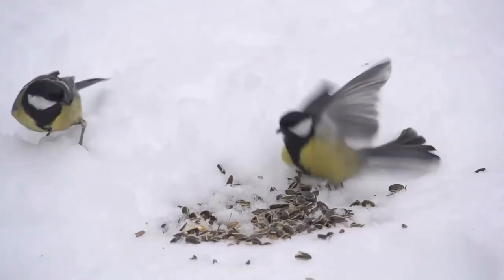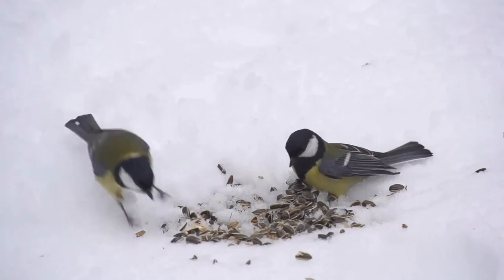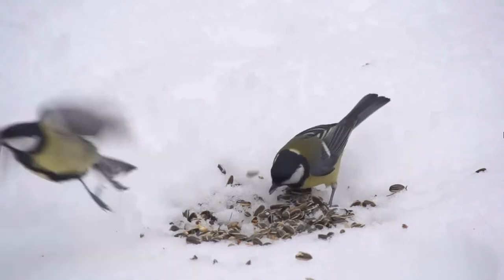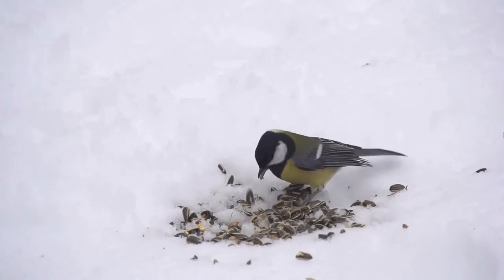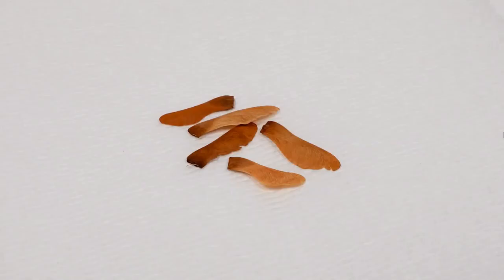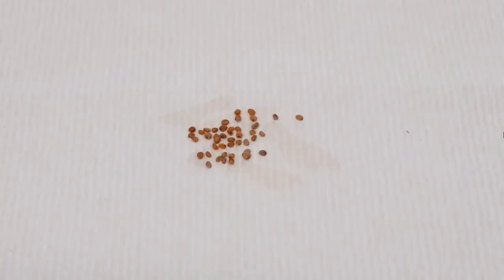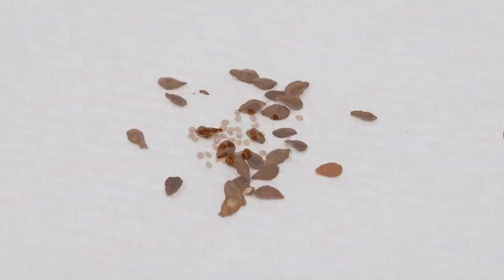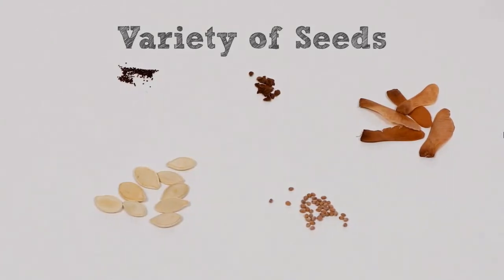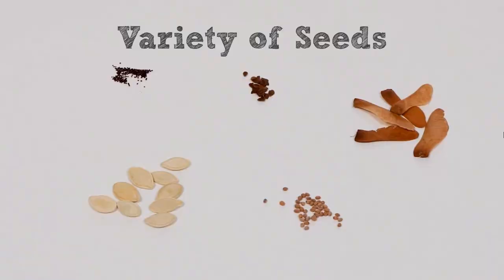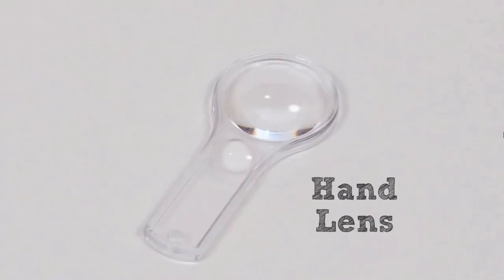Plants need seeds to make new plants. In the video that you watched earlier, you observed seeds attached to animals. In this lesson, we're investigating how plants depend on animals. In this activity, you'll observe different kinds of seeds. For this investigation, you will need a variety of seeds, a paper towel, and a hand lens.